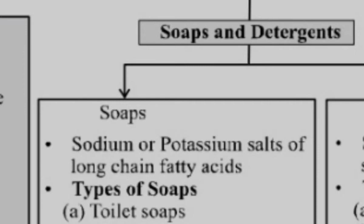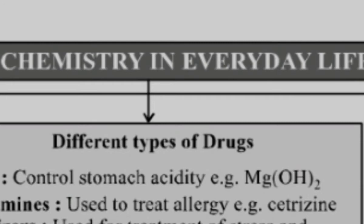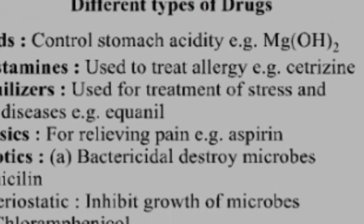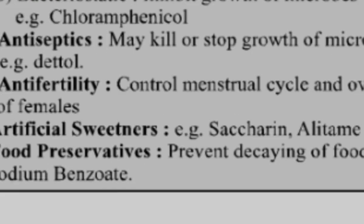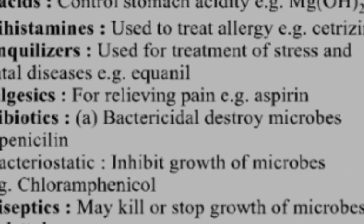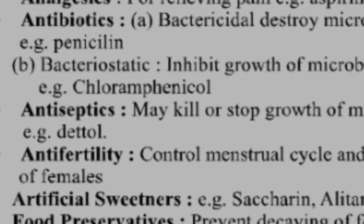Dear students, this is the summary of the chapter Chemistry in Everyday Life. We will discuss all these points and the full syllabus in depth in separate videos. There are different questions from this chapter that appear many times in competitive exams — for example, antacids controlling stomach acid is a question asked multiple times in CTET. Please like and share this video, and if it wasn't helpful, you can dislike it too. Thank you so much.